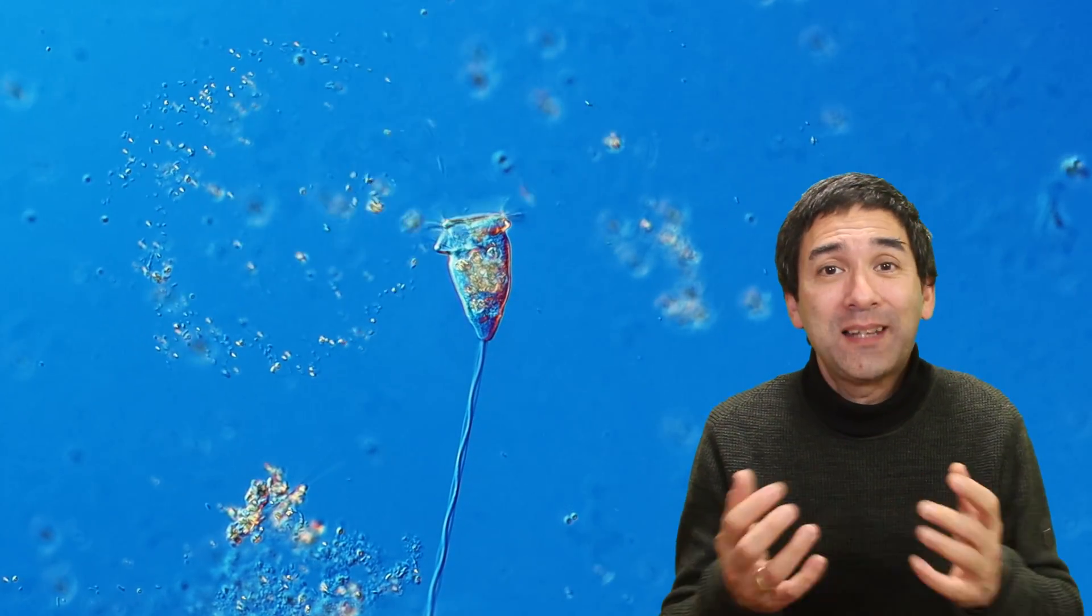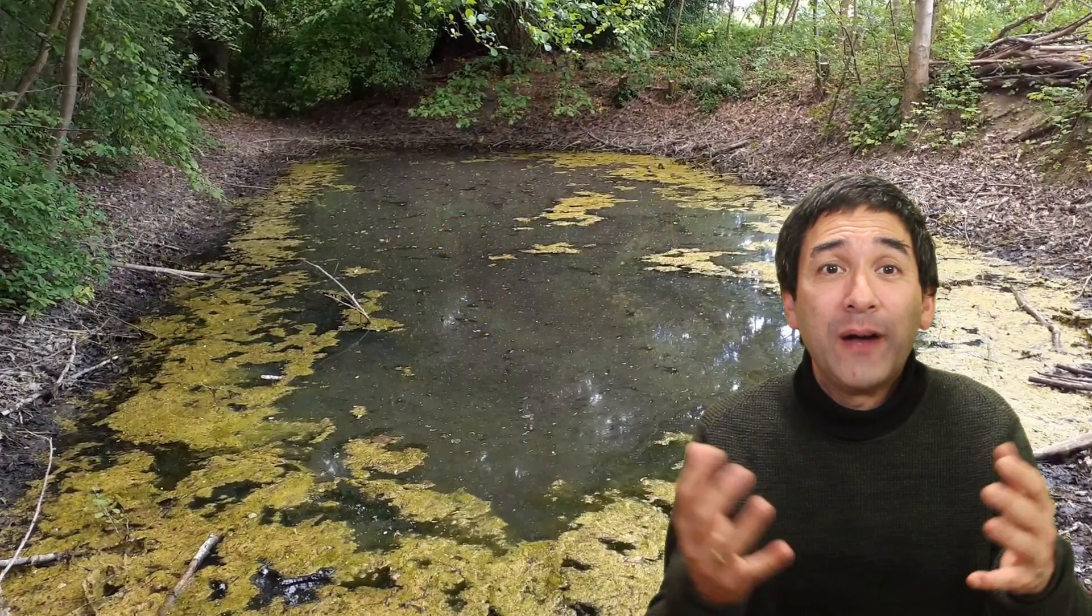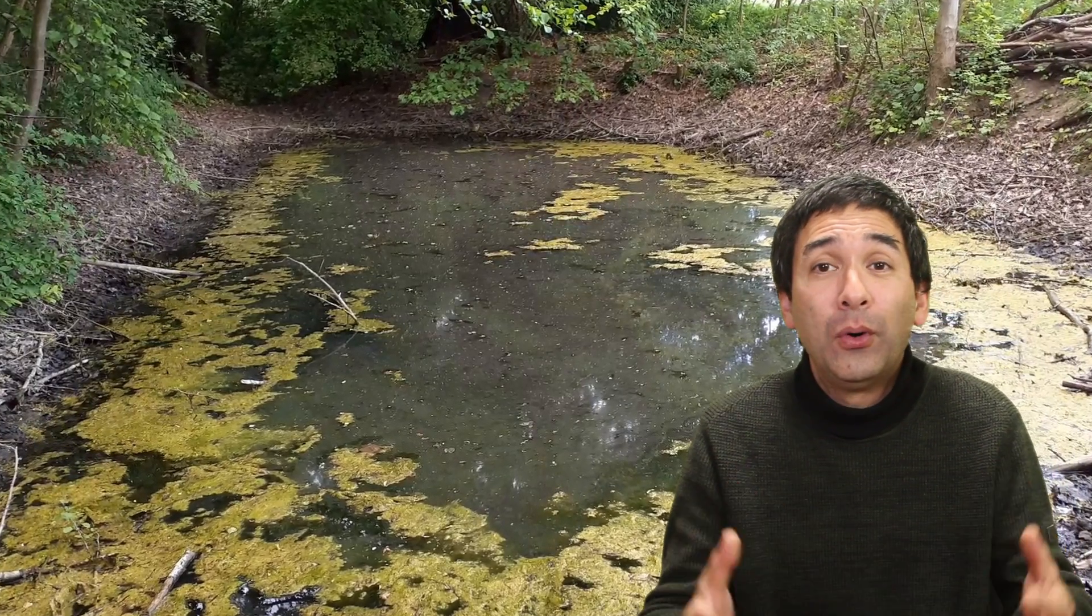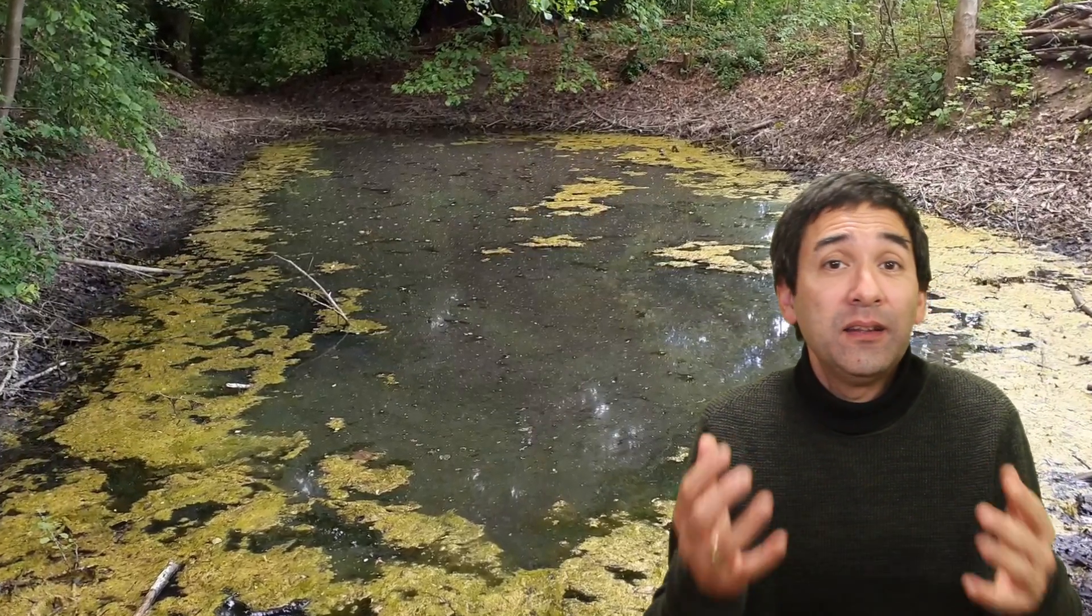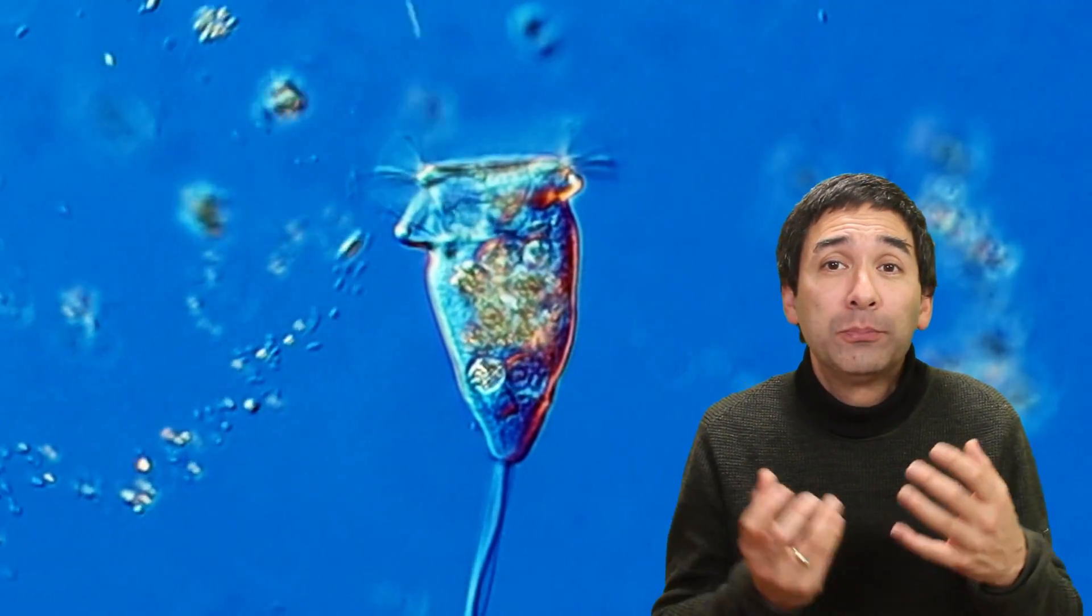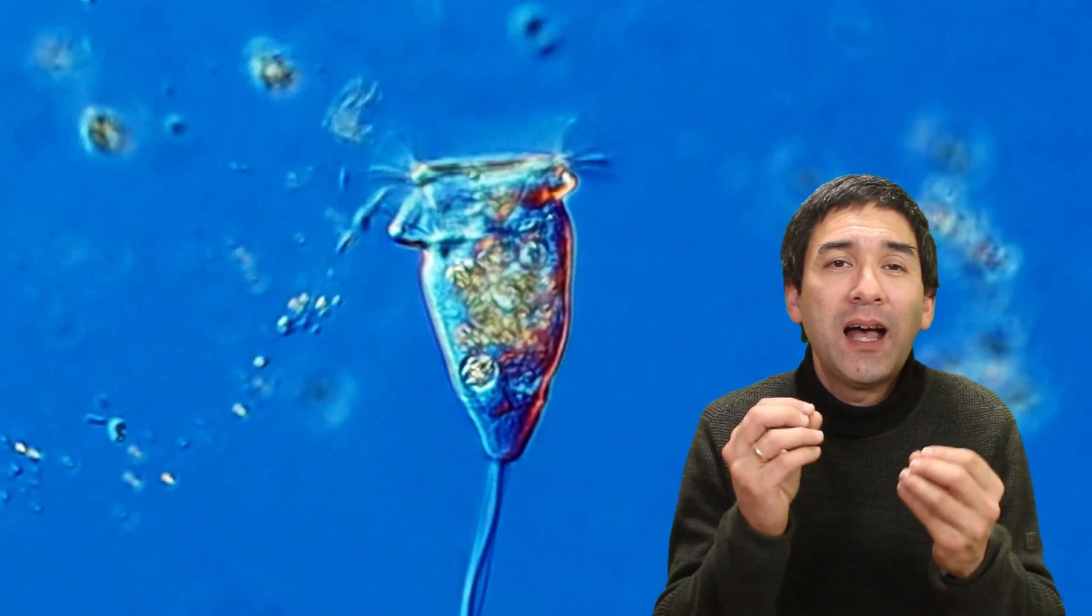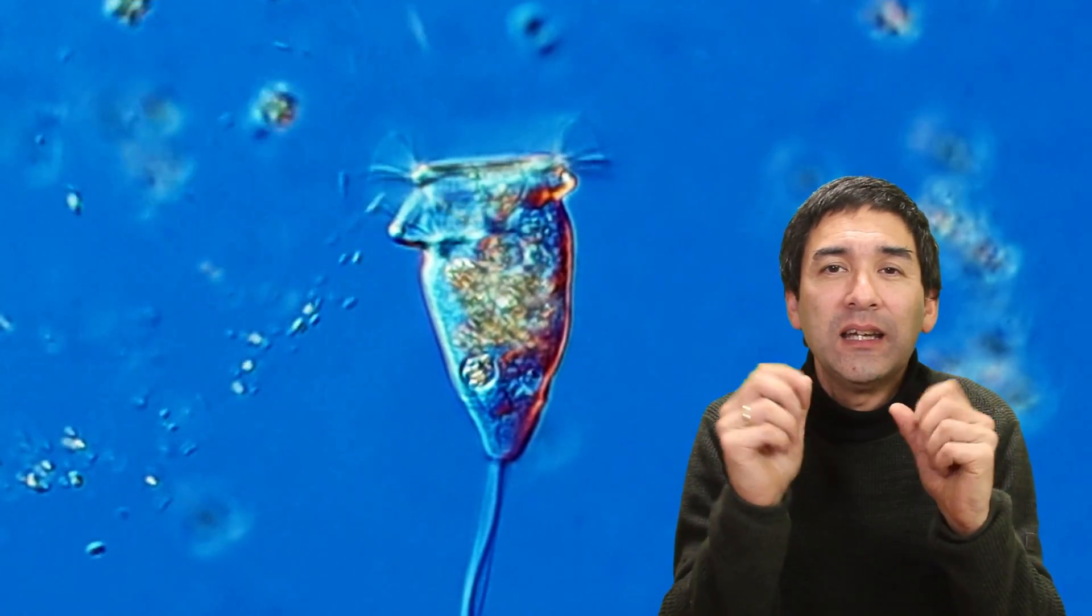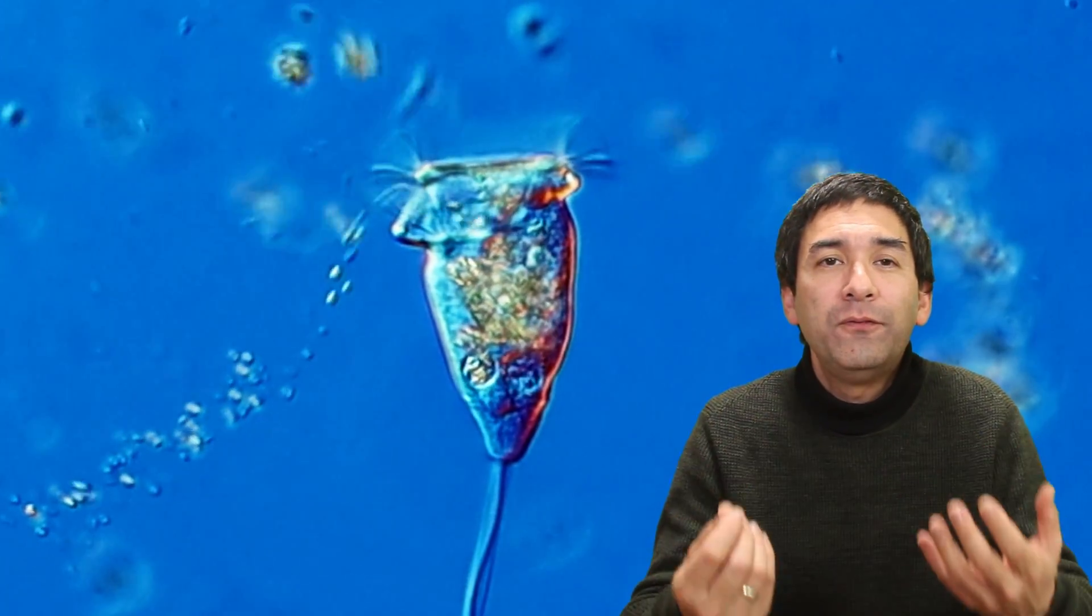A few interesting facts about Vorticella. You can find them in freshwater environments like, for example, ponds or streams. And Vorticella belongs to the so-called ciliates. Ciliates are protozoans and they have tiny hair-like structures called cilia that help them move and feed.